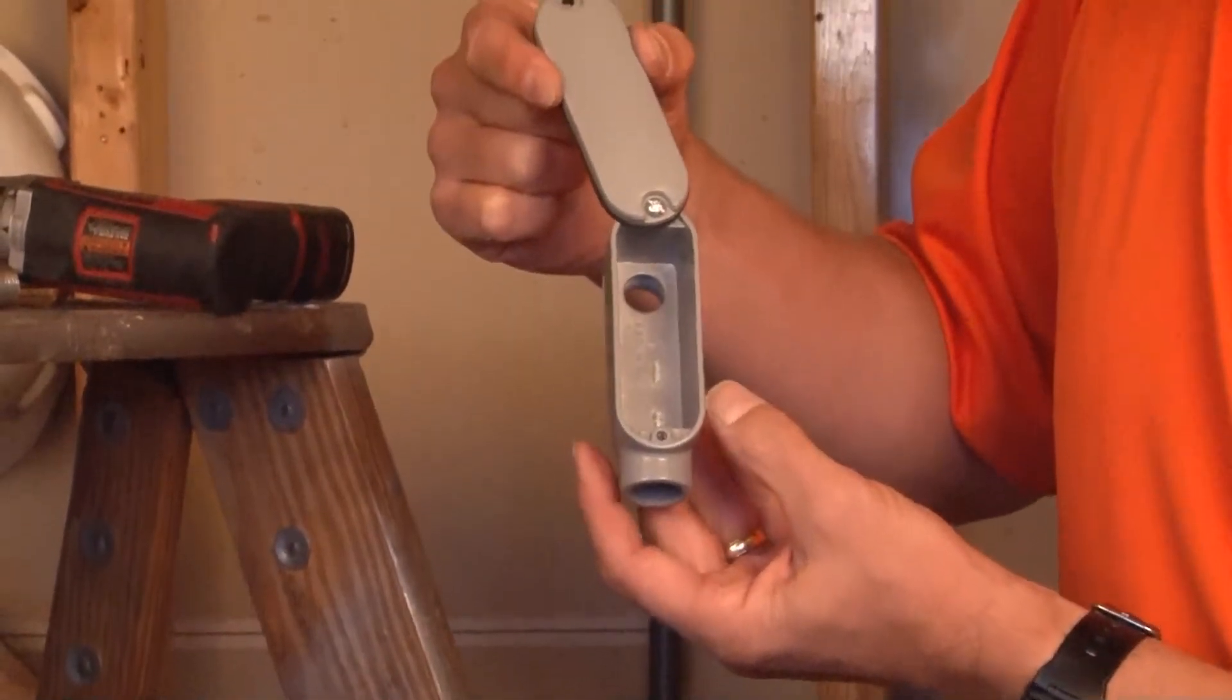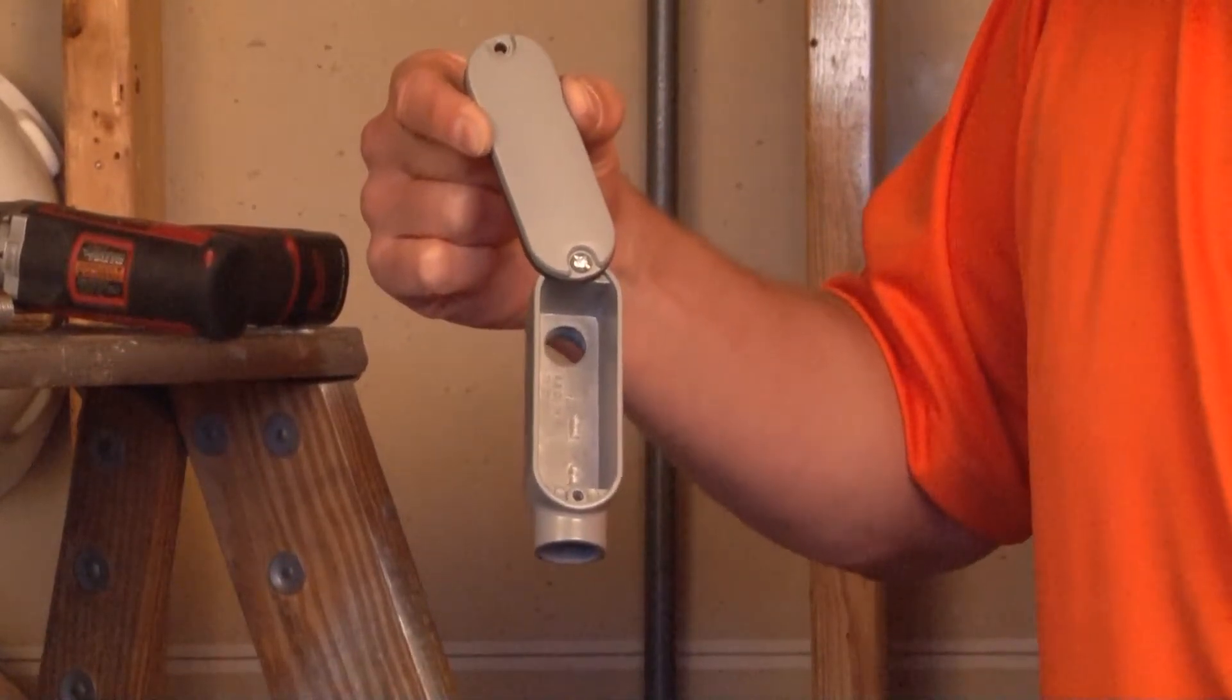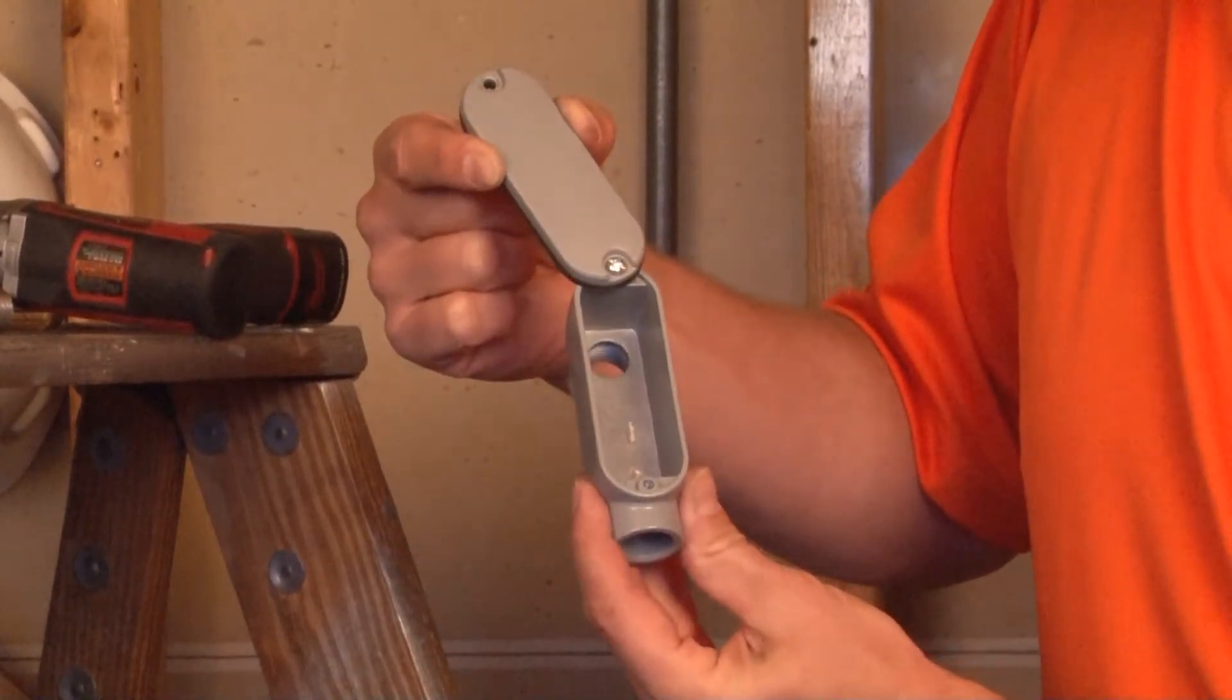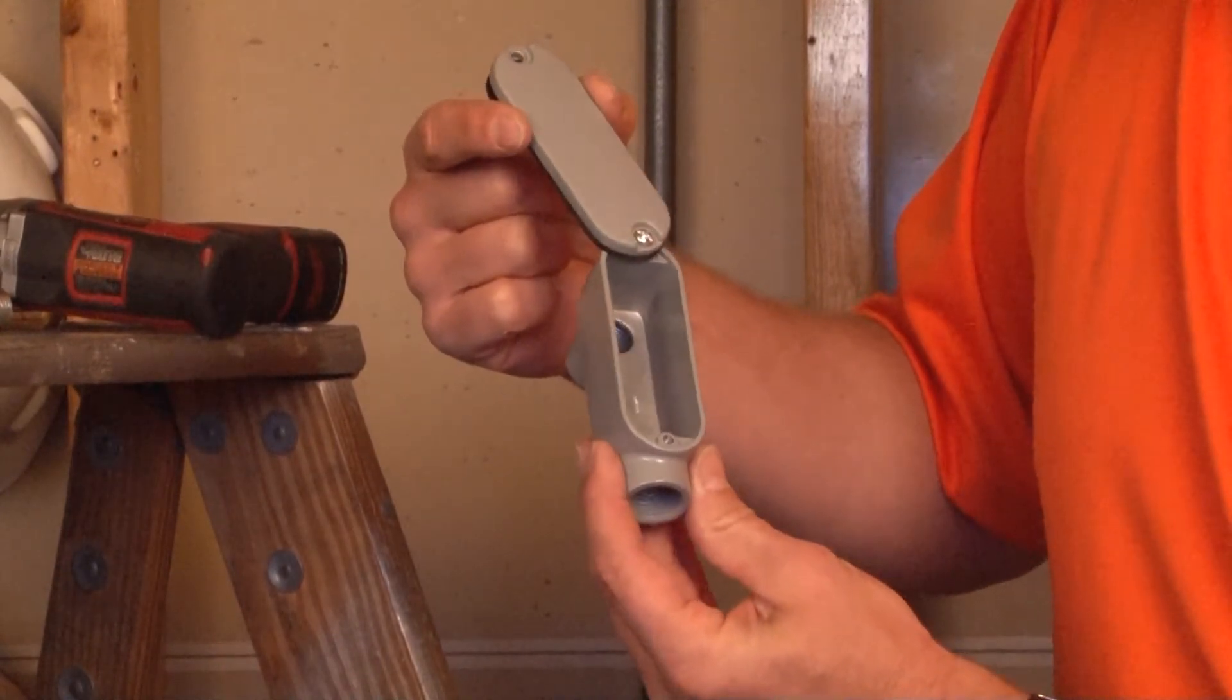When you have this door open, it allows you to pull the wire through one direction and feed it at a 90-degree angle, making wire pulls and adding wires and other conductors simple and easy.